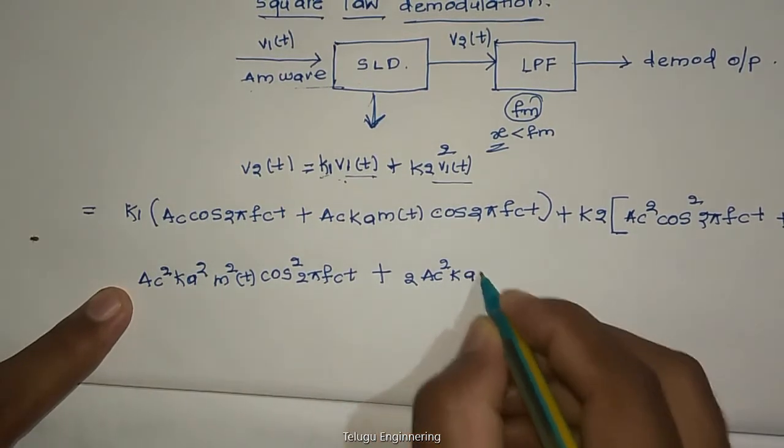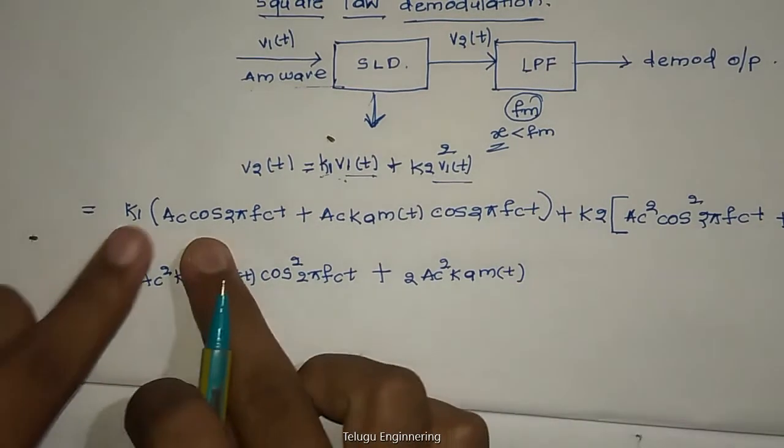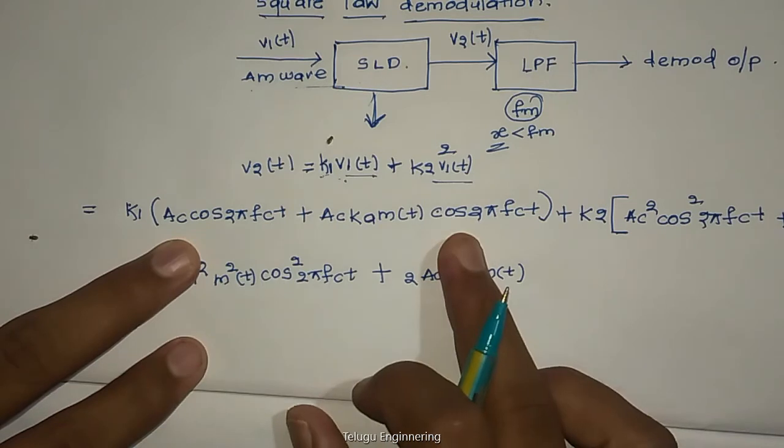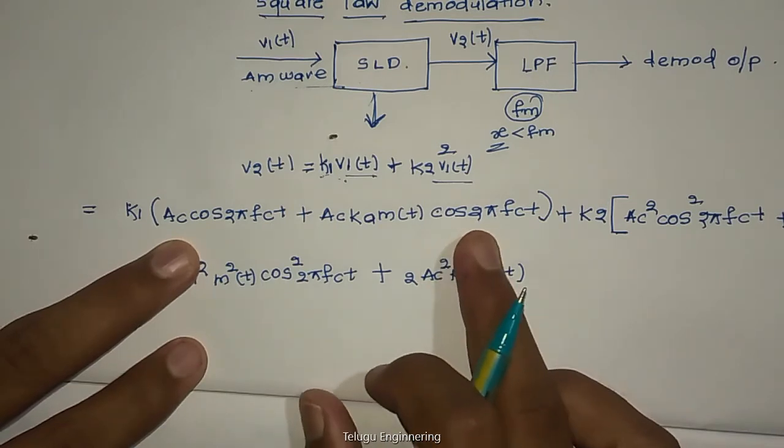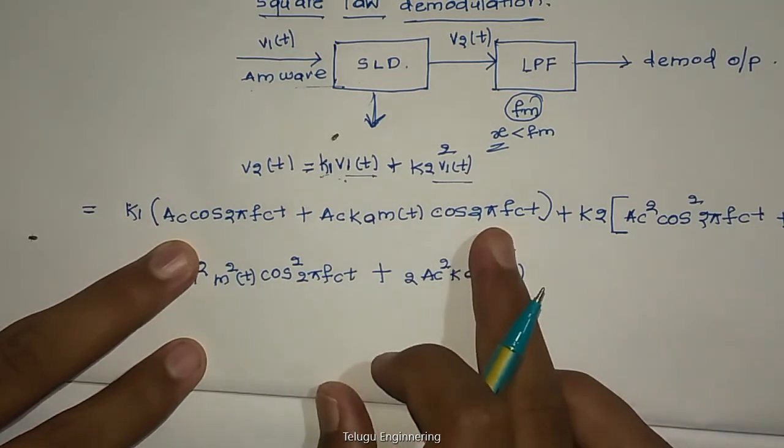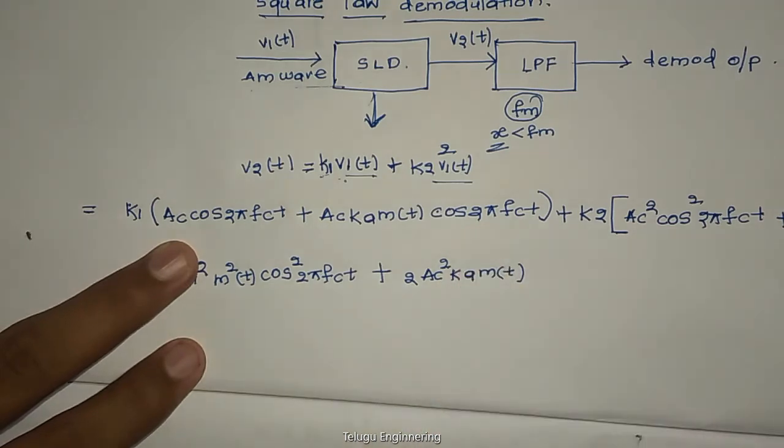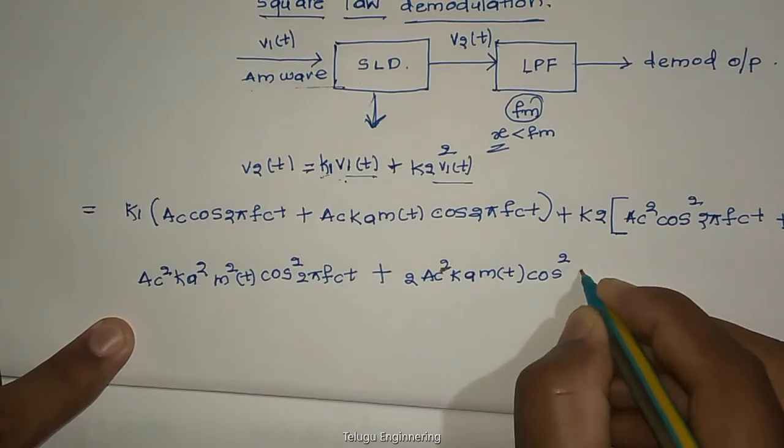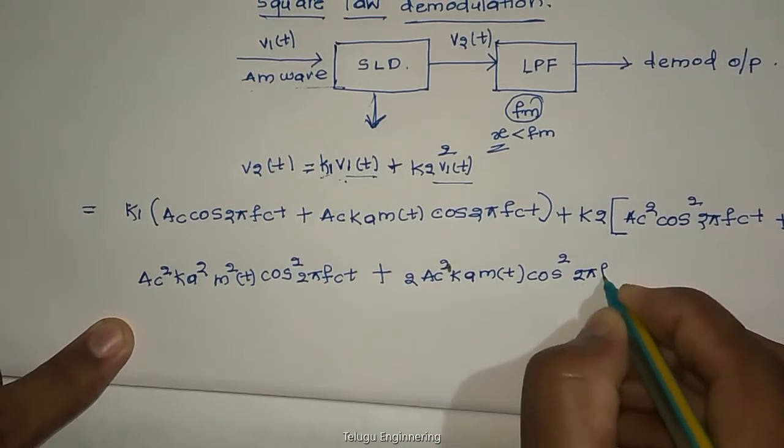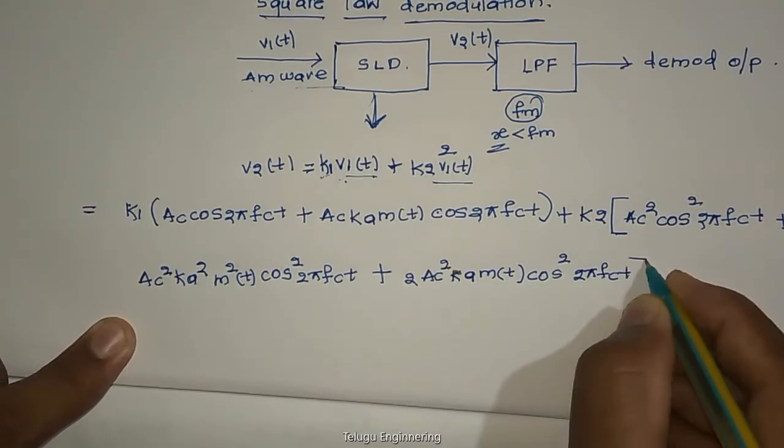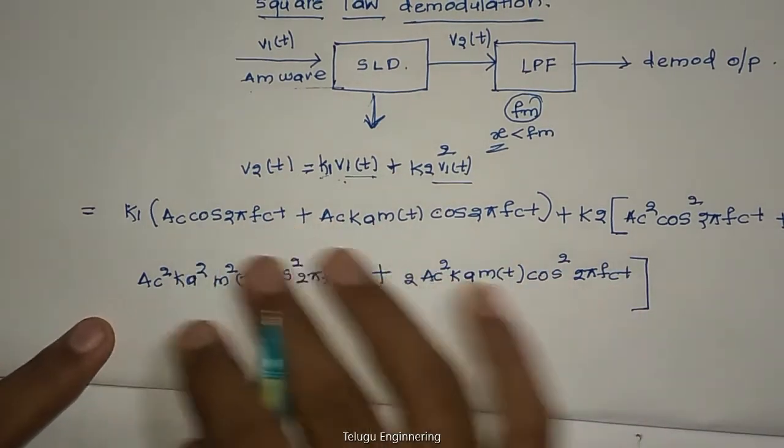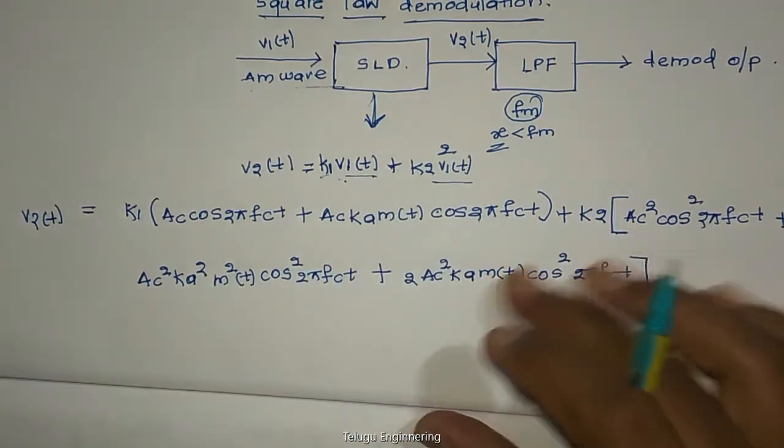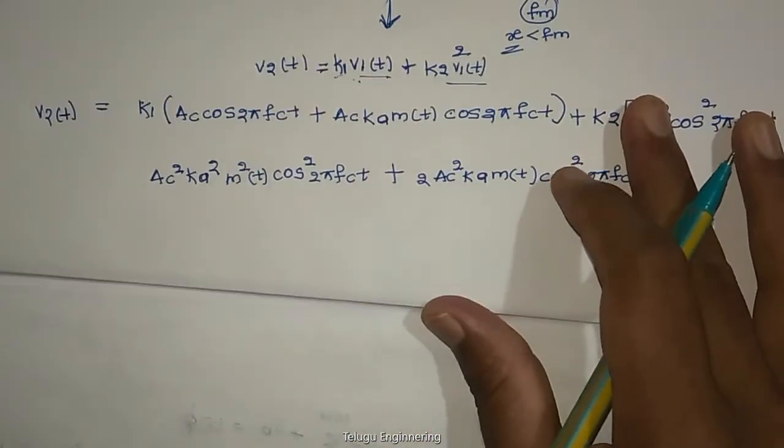And another function is cosine 2 pi FCT, that will be cosine square 2 pi FCT. Alright, this is V2 of T. We will solve this output.